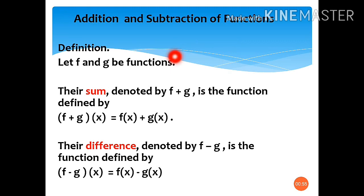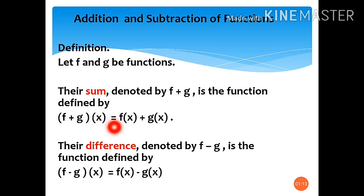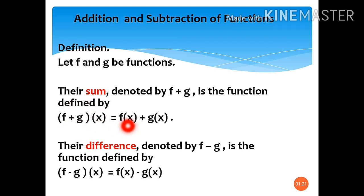Addition and subtraction of functions. For the definition, let f and g be functions. In addition, their sum, denoted by f plus g, is the function defined by (f + g)(x) = f(x) + g(x). So when you see this notation, it equals f of x plus g of x.